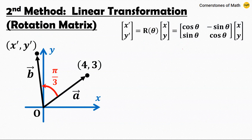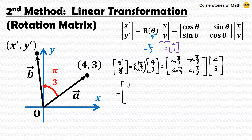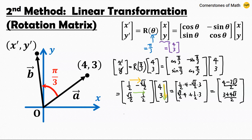Now, using this rotation matrix, we can find vector b. In this problem, column vector (x, y) is simply (4, 3) and theta equals pi over 3, so the rotated point (x′, y′) equals R(pi/3) times (4, 3). Therefore we compute [1/2, −√3/2; √3/2, 1/2] times [4; 3], which gives: first component 1/2 × 4 − √3/2 × 3, and second component √3/2 × 4 + 1/2 × 3. So we have (4 − 3√3)/2 and (3 + 4√3)/2, which is our vector b.